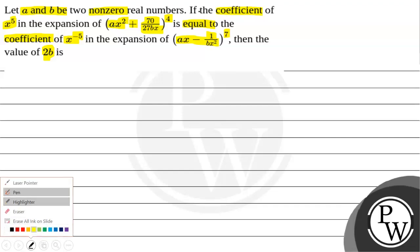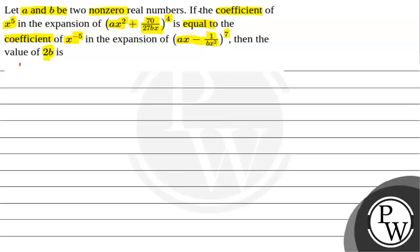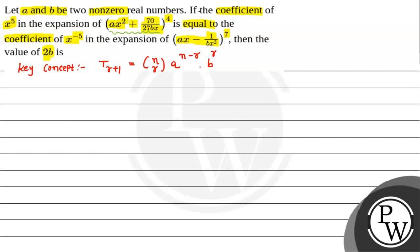Here we need to find the value of 2b. The key concept to solve this question would be the general term of (x + a) raised to n, that is t(r+1) = nCr × a^(n−r) × b^r. We will first find t(r+1) for the first expansion and find the coefficient of x^5, then for the second expansion find the coefficient of x^(−5), and then equate both to find the value of b.